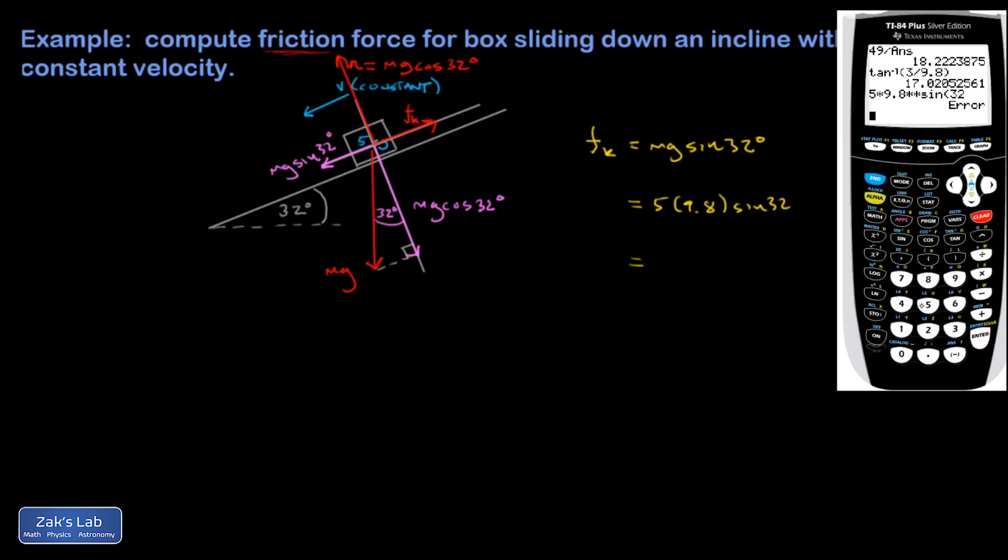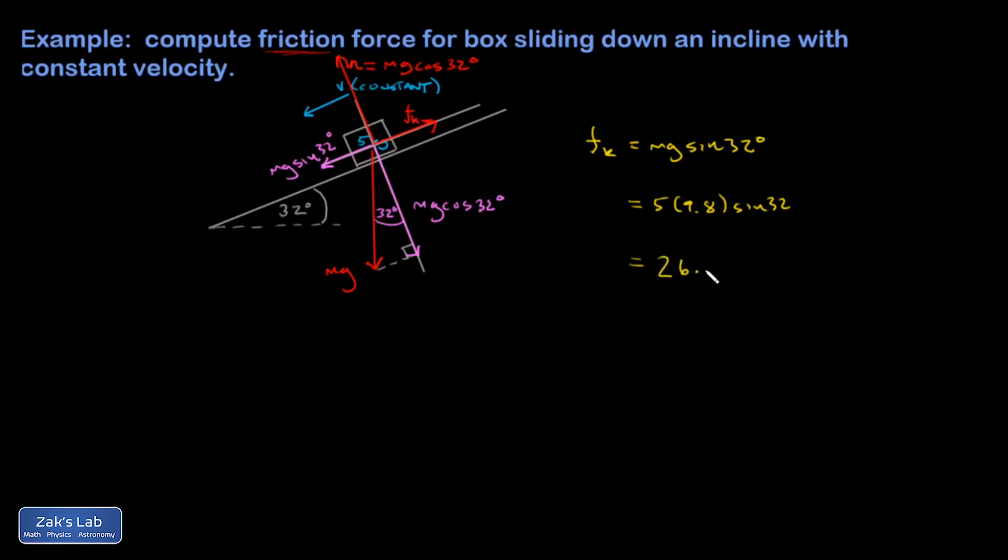And I did two multiplies. Okay, 5 times 9.8 times the sine of 32. And I get 25.96 or 26.0. So 26 newtons is the friction force here.